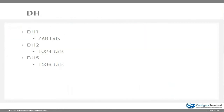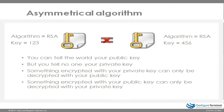Diffie-Hellman comes in different forms. Diffie-Hellman 1 is 768 bits in length. Diffie-Hellman 2 is 1024 bits in length. Diffie-Hellman 5 is 1536 bits in length. The longer the key length, the more secure — but the downside is more processing power is required. Just to reiterate, asymmetric key algorithms are used in VPNs today not for bulk encryption of data, but they help with the establishment of a shared secret.